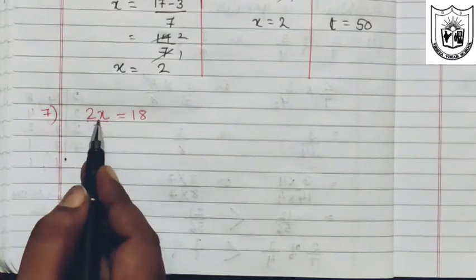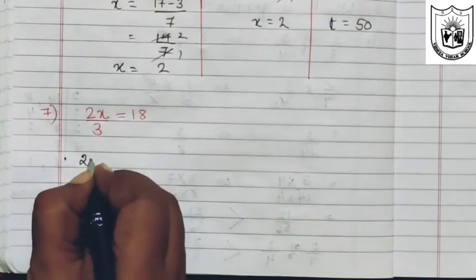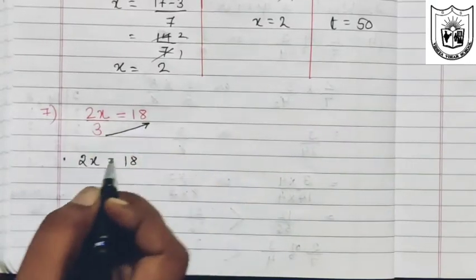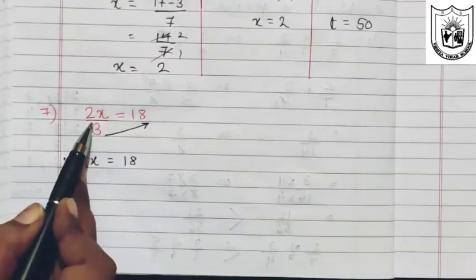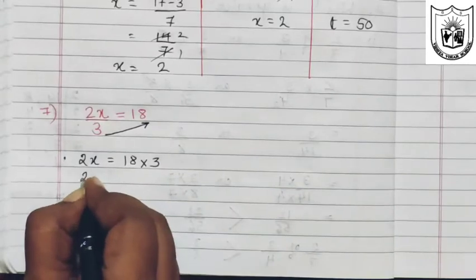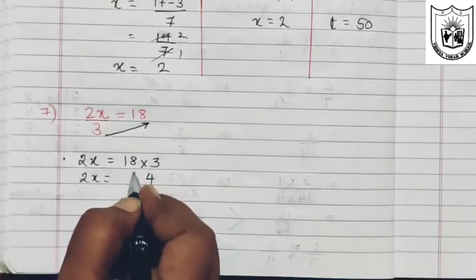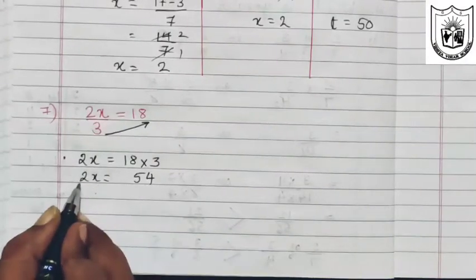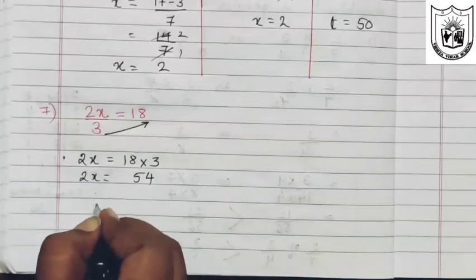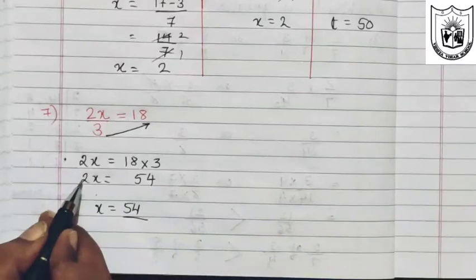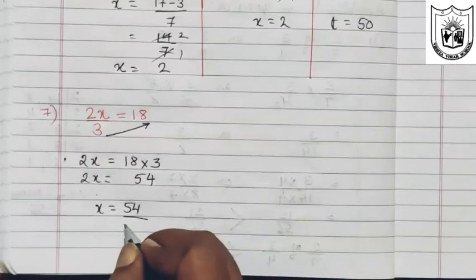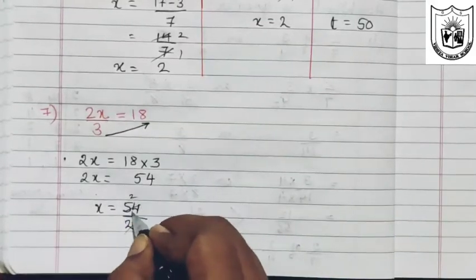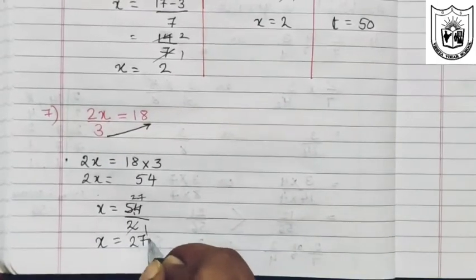Let us now solve the seventh problem: 2x divided by 3 equals 18. We transpose 3 from the denominator to the right hand side, so division becomes multiplication. So 2x equals 18 multiplied by 3, which is 54. Now we transpose 2 from the left hand side; multiplication becomes division. So x equals 54 divided by 2, which is 27.